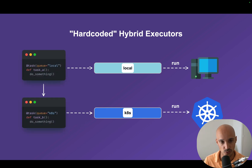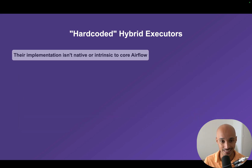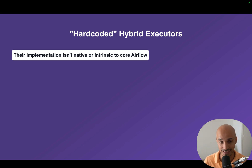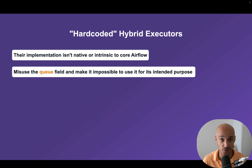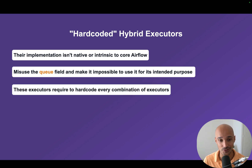The problem with those hard-coded hybrid executors is that they are hard-coded, so their implementation isn't native or intrinsic to Core Airflow — it's a little bit hacky, to be honest. They misuse the Q field and make it impossible to use it for its intended purpose. Remember that you should use the Q parameter to better distribute your tasks to specific workers with more resources. And finally, these executors require hard-coding every combination of executors, which is definitely not sustainable.